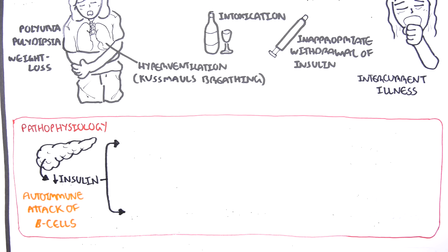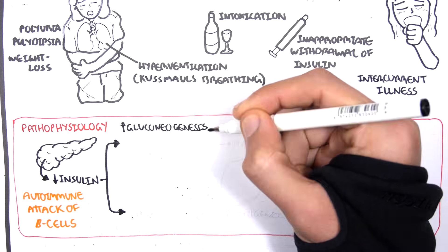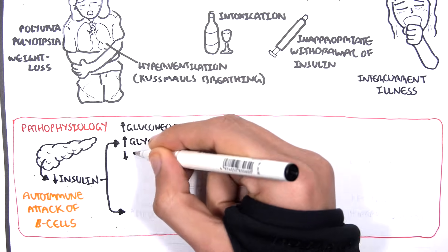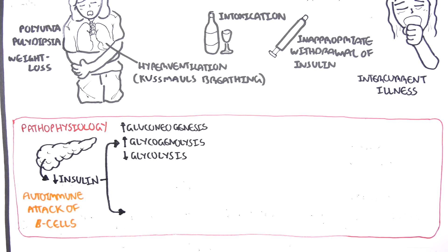First, it means that gluconeogenesis is not inhibited, and so we get gluconeogenesis. We get more production of glucose. We also get increased glycogenolysis and we get a decrease in glycolysis. All of which will result in more glucose in the blood. So we get hyperglycemia.